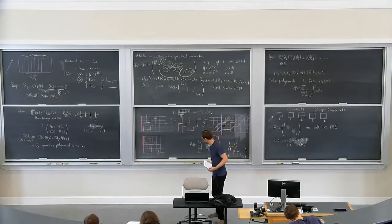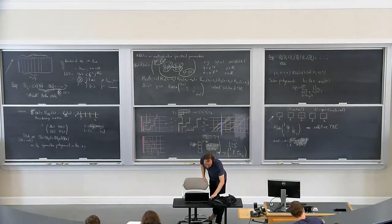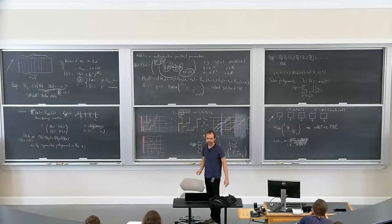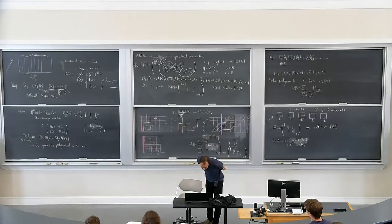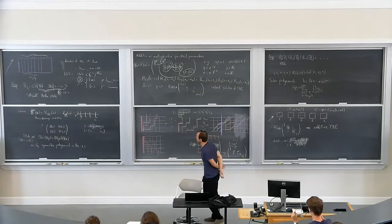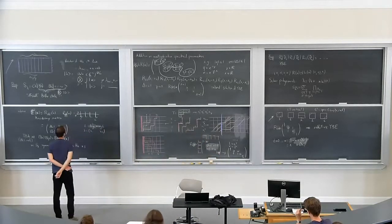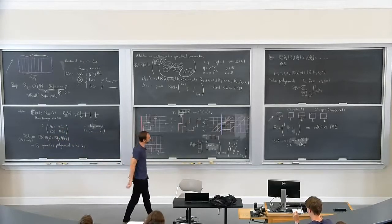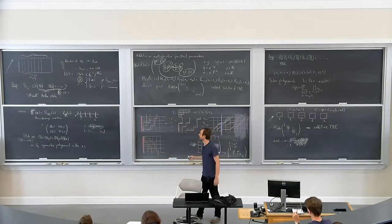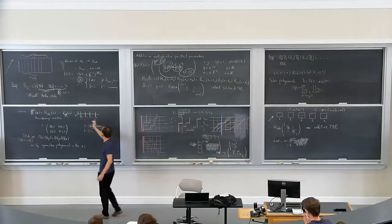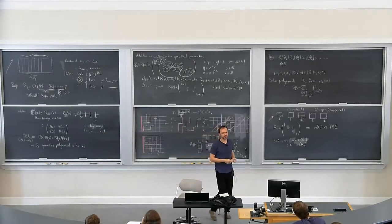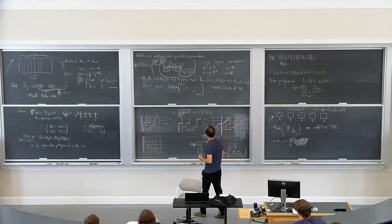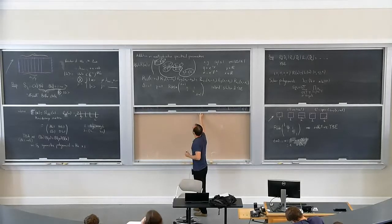This was actually already mentioned by Oli — he mentioned that the commutation of these objects was a sign of integrability. Here we have it in full glory. Maybe at this stage is the right time to say that it's natural in this setting to extend the vertical spaces to have an infinite number of them, both left and right. This leads to the notion of a fermionic Fock space.